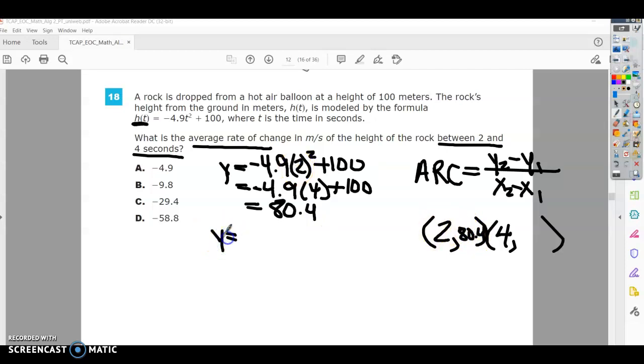Now I'm going to find my y value that goes with 4 seconds. So I'm going to use the same formula, negative 4.9. This time I'm going to plug in 4. And I'm going to simplify. So again, I've got negative 4.9. 4 squared is 16 plus 100.